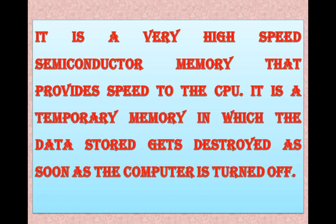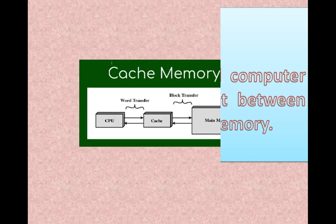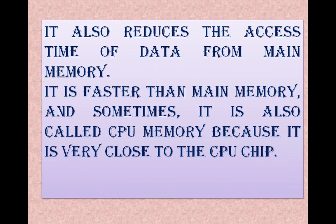It acts as a buffer between CPU and the main memory. So it also reduces the access time of data from the main memory. It is faster than the main memory and it is sometimes known as CPU memory.